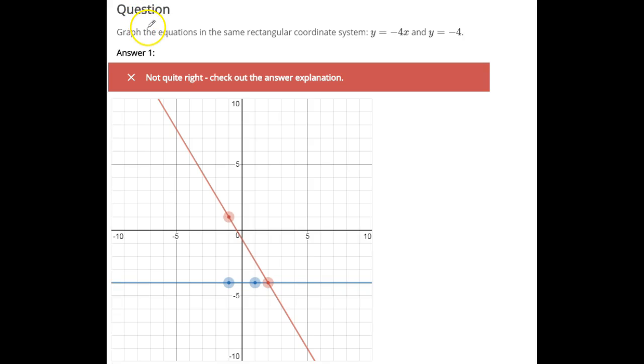For this question, we are graphing two equations here on the same coordinate system. And I'll do this one first. y equals negative 4. And that's drawn correctly down here. No matter what you pick for x, no matter where we are on the x-axis, the y value should still be negative 4. So it's a horizontal line right here at y equals negative 4.